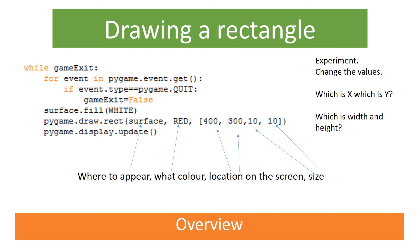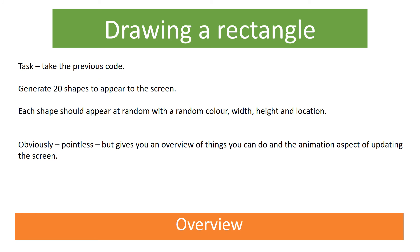Look at this new code I've added on the screen: pygame.draw.rect. This is going to create a rectangle on the screen. You can tell it where to appear — we've said 'surface', remember that is our main programme — what colour it's going to be, then its size and location. I want you to try adding this and have a play with the x and y values. Then, what I want you to do is try to make 20 shapes appear on the screen — these should be random, with a random colour, random width, height, and location. It's an absolutely pointless game, but think about how this could affect animation.